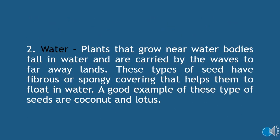Number two: dispersal by water. Plants that grow near water bodies fall in water and are carried by the waves to far away lands. This type of seeds have a fibrous or spongy covering that helps them to float in water. Good examples of this type of seeds are coconut and lotus. Students, please turn to your book page number 56 to see the picture of dispersal by water.